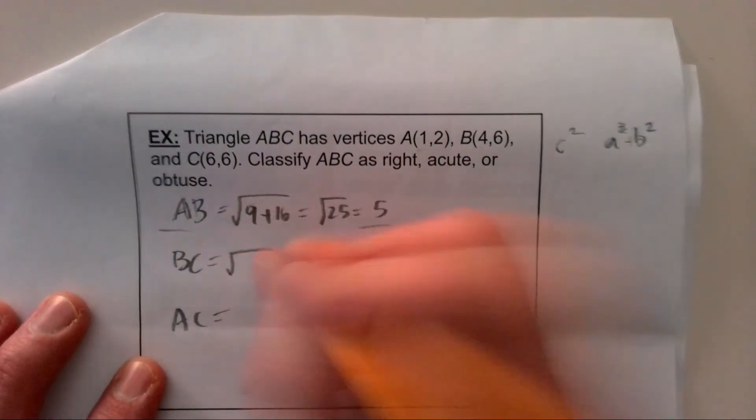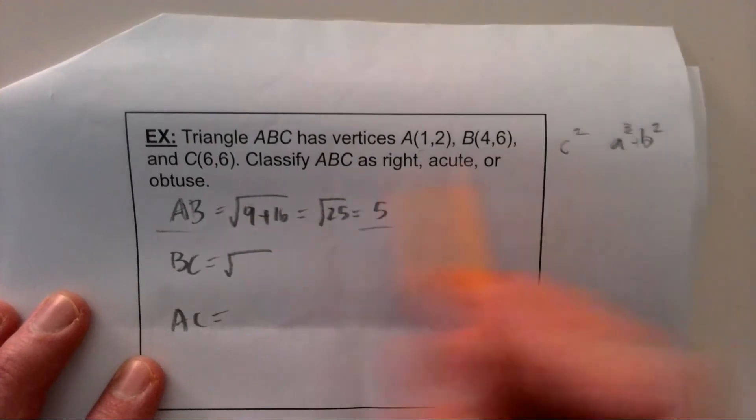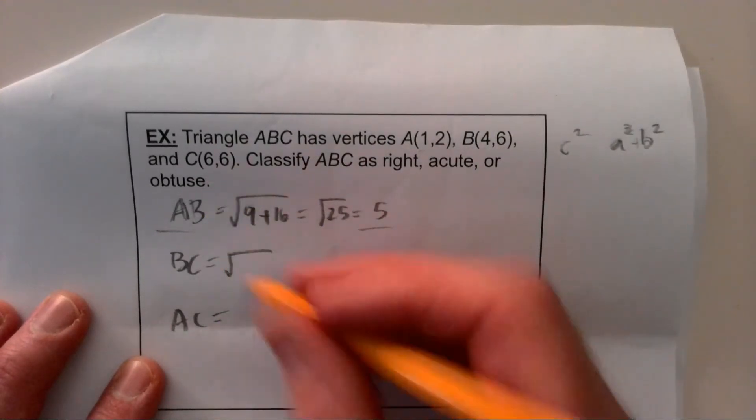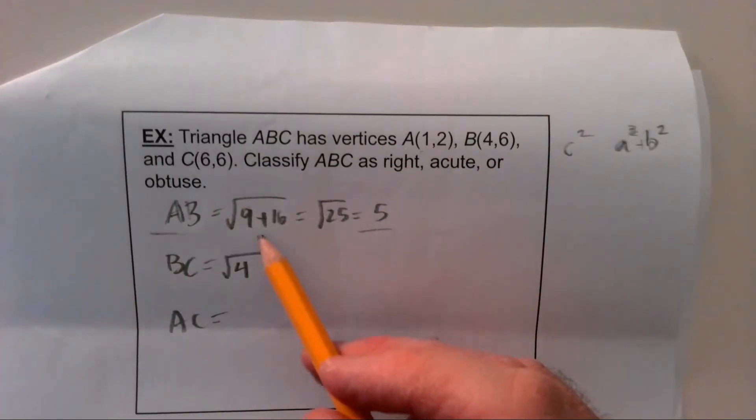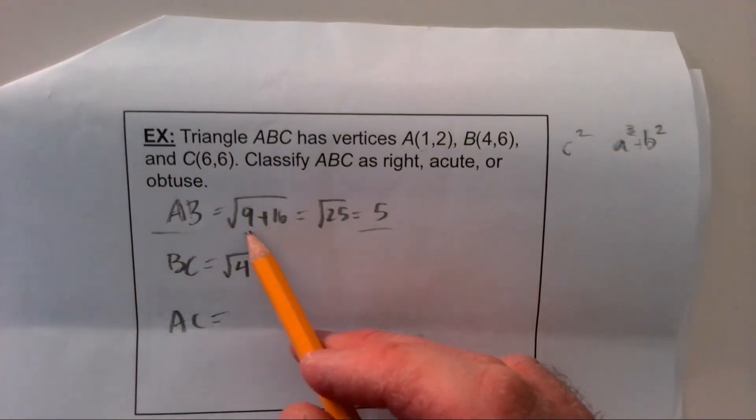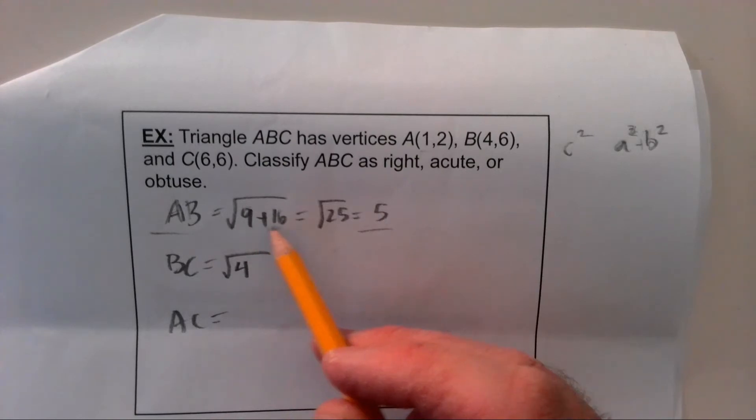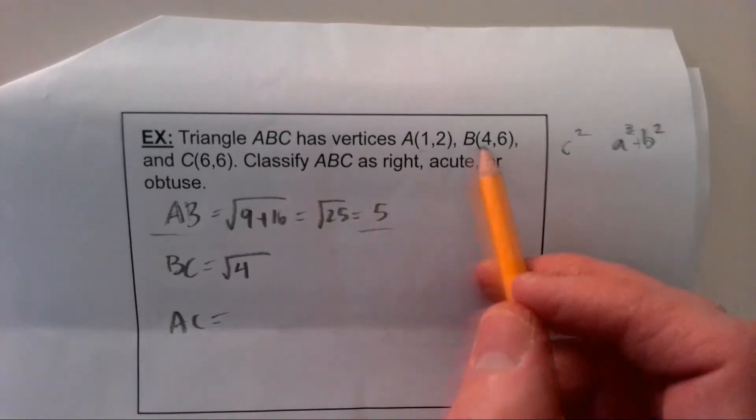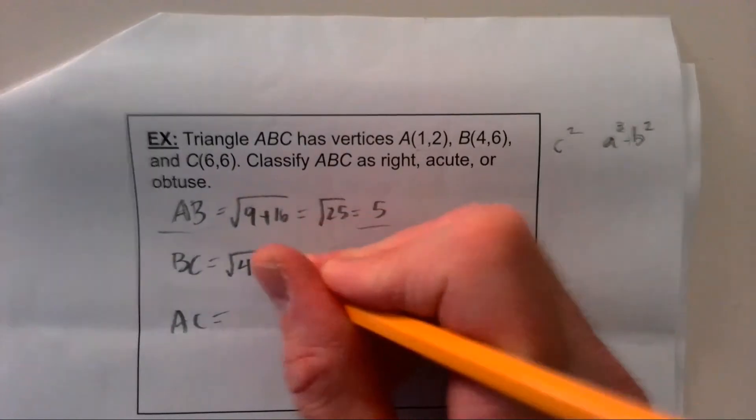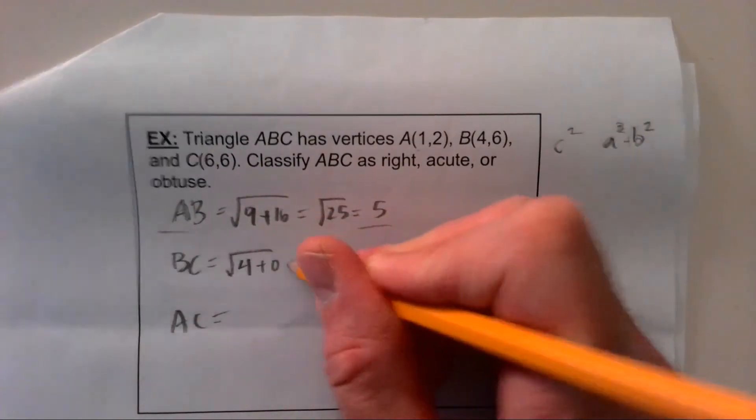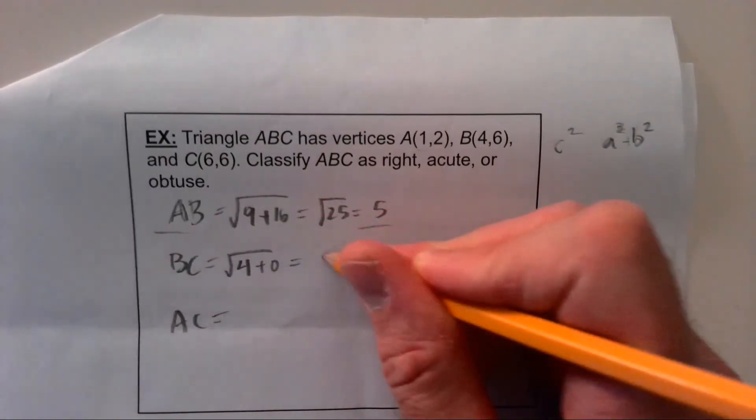BC, you can do the same thing. From 4 to 6, that's a change of 2, and when you square that, that's 4. Because remember, distance formula: the change in x squared plus the change in y squared, and then once you get that value you take the square root of that sum. So 4 to 6, that's a change of 2. 6 to 6, well that's a change of 0. That's 0 squared. Square root of 4 is just a 2.